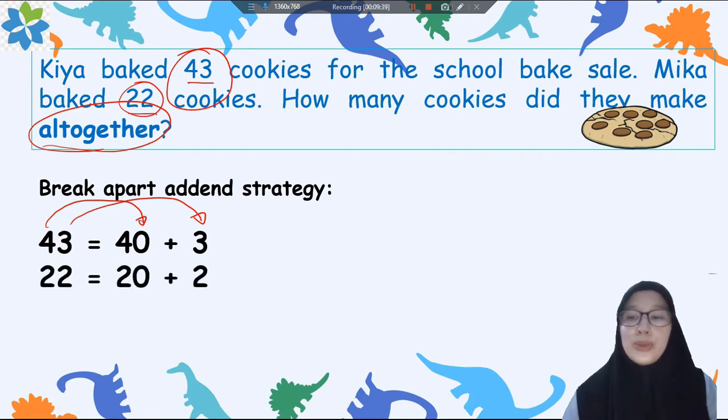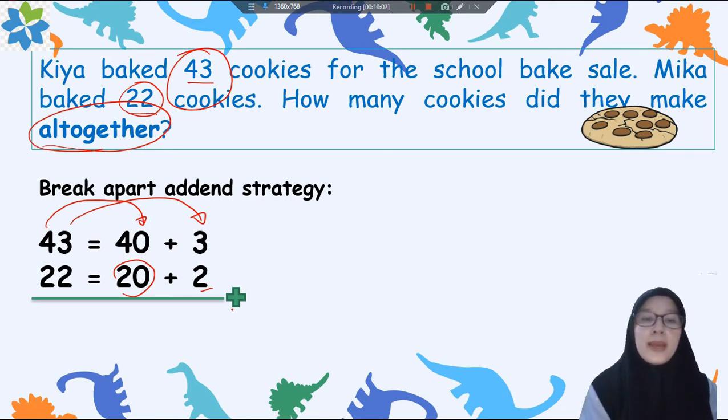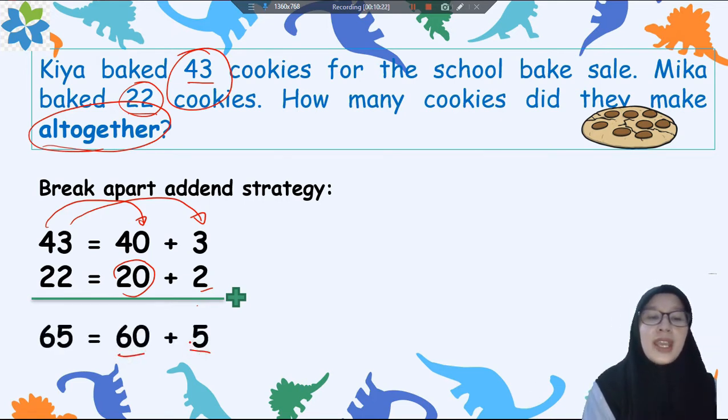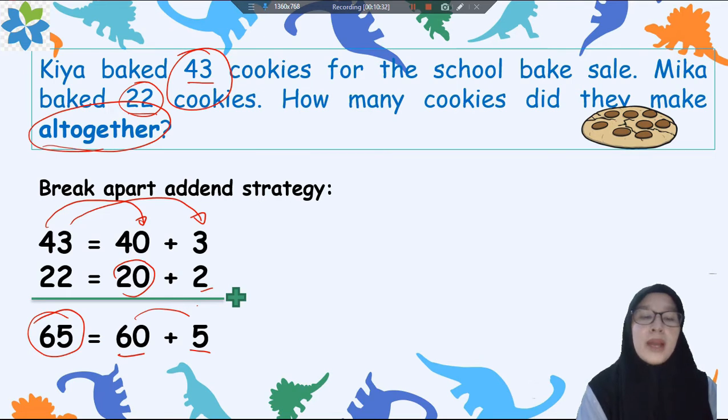Next, 22 means 20 plus 2 right? And next let's add together. Sekarang kita jumlahkan ke bawah for vertically addition. Kita jumlahkan secara vertical atau ke bawah. First start from the ones. Kita mulai dari satuannya. 3 ditambah 2, 5 right? And then 40 plus 20 equals 60. Let's see, yes 60 and 5. And let's add together and it will become 65. Jadi hasilnya adalah 65.